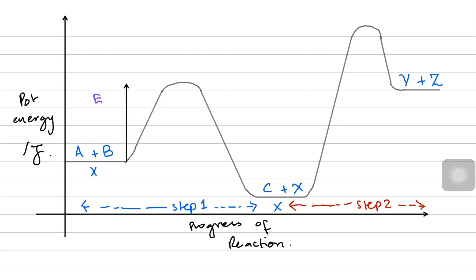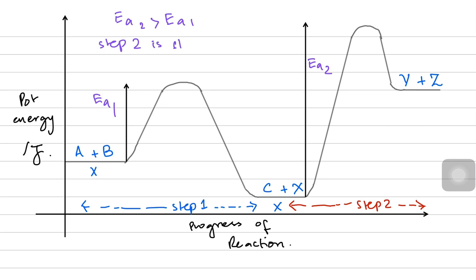You can see the activation energy for step one, Ea1. From C + X to the second peak is the activation energy for step two, Ea2. Since Ea2 is greater than Ea1, the second step has a higher activation energy requirement, so step two would be slower because it has to absorb more energy to start the reaction. Activation energy controls the speed of the reaction — higher activation energy slows down the reaction — so step two would be the slower step.